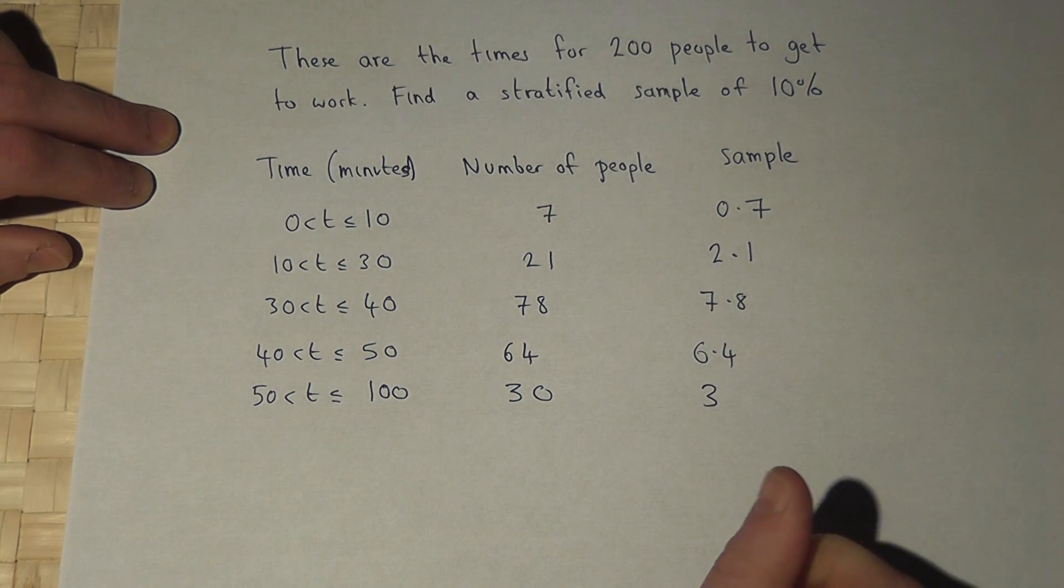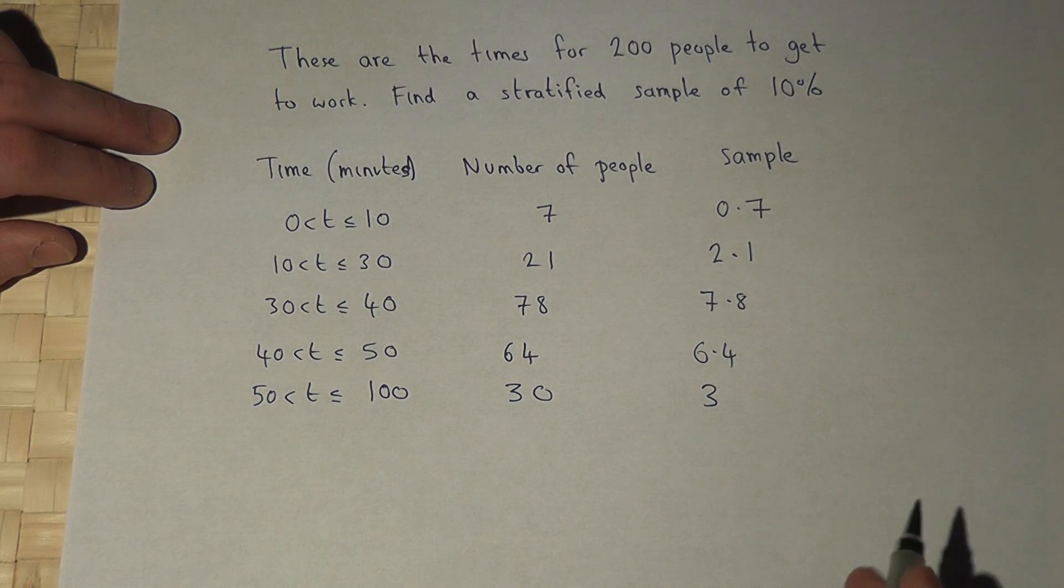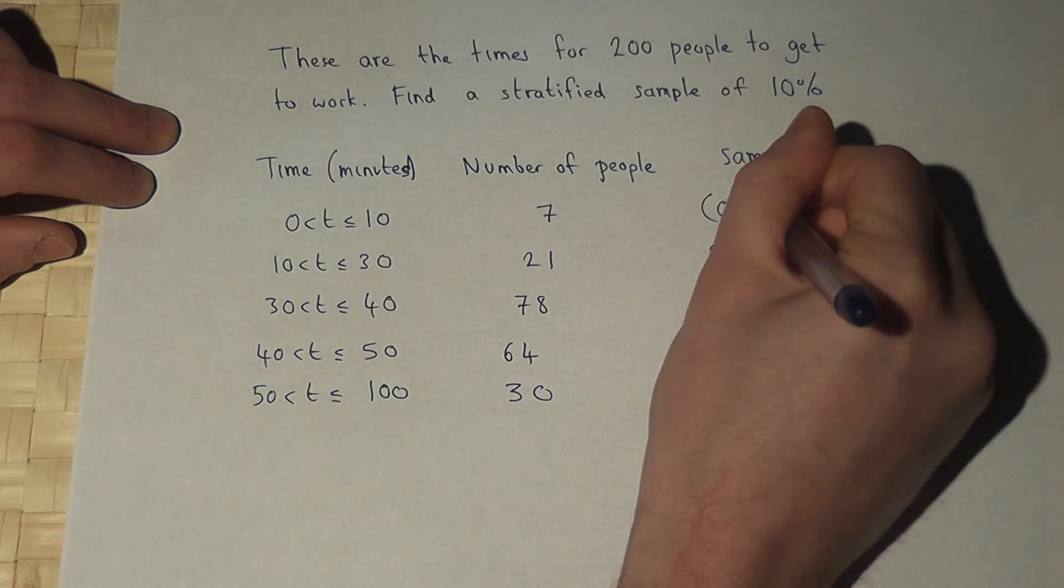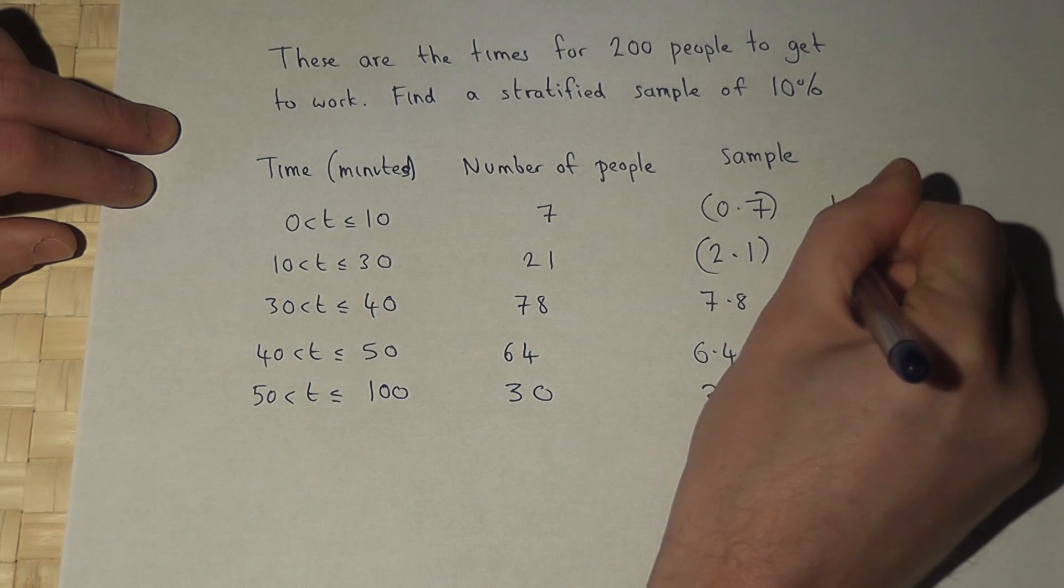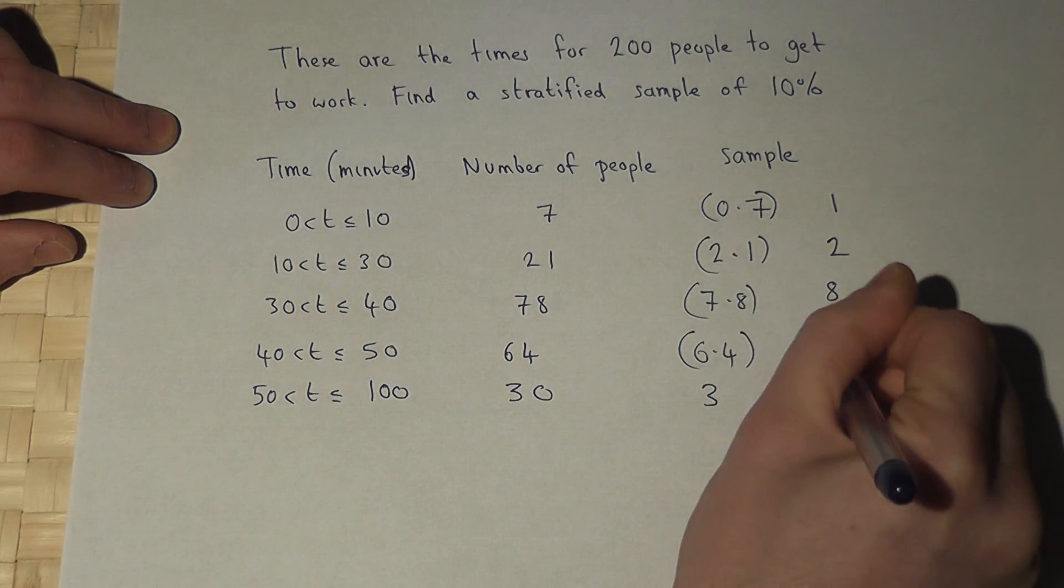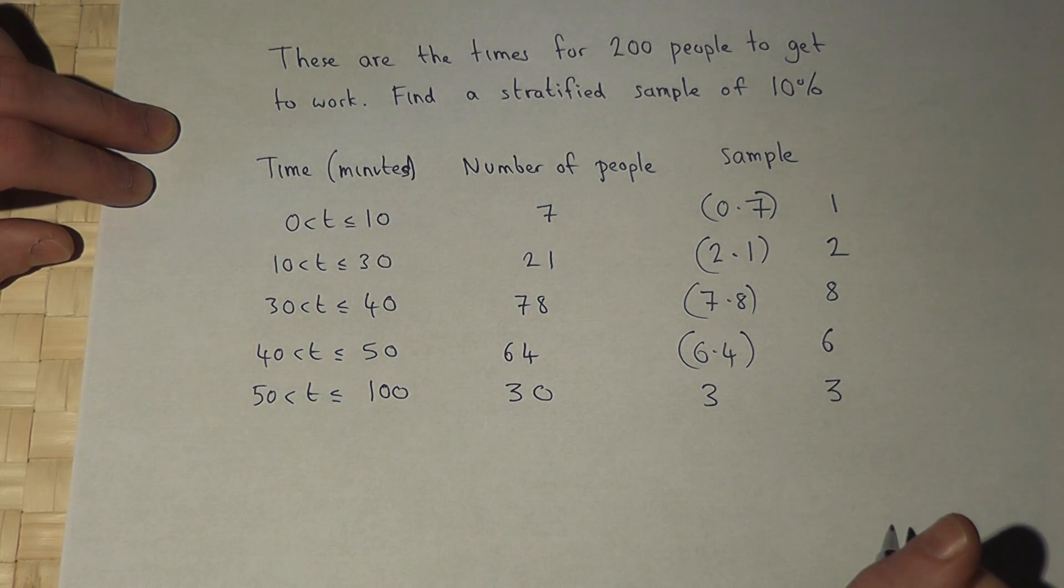Now we can't ask 0.7 of a person, so we must round all these values accordingly. So 0.7 rounds to 1, 2.1 rounds to 2, this rounds to 8, this rounds to 6, and that stays at 3.